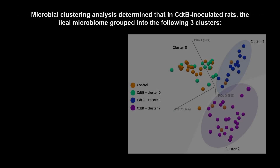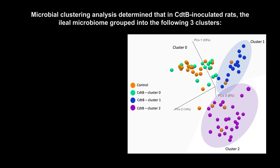Microbial clustering analysis determined that in CDTB inoculated rats, the ileal microbiome grouped into the following three clusters.